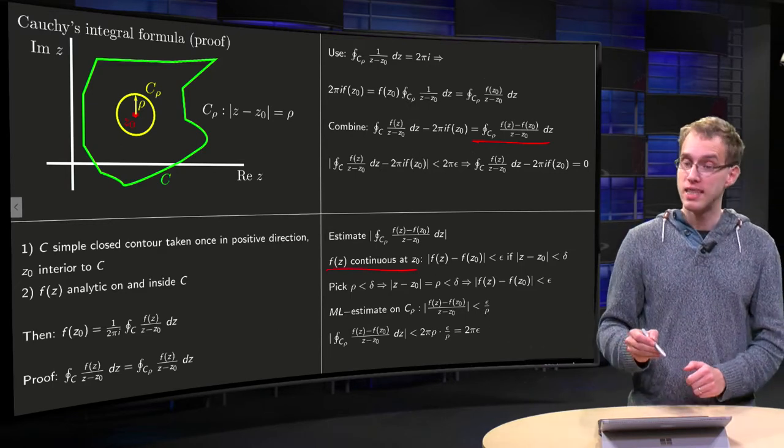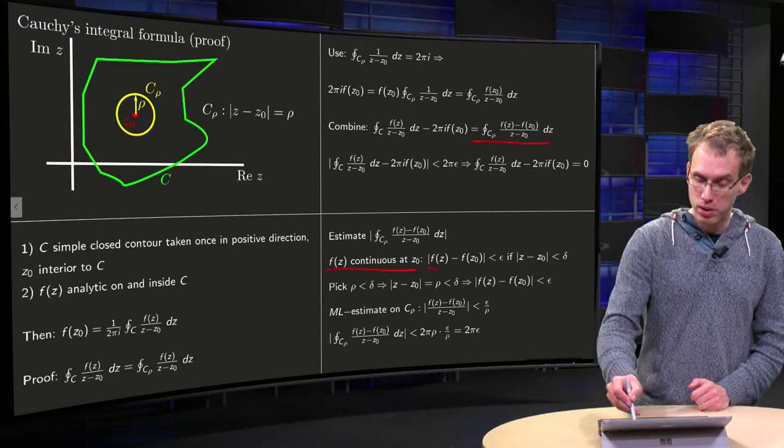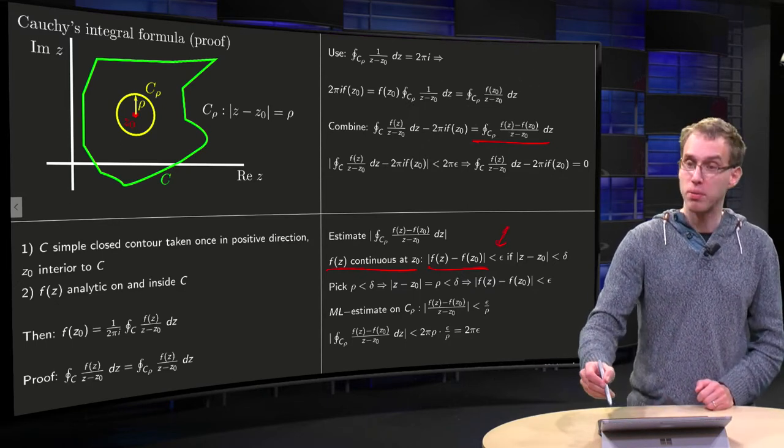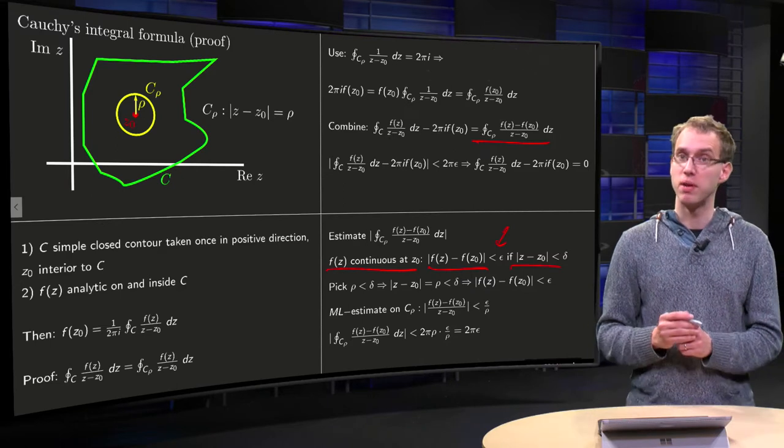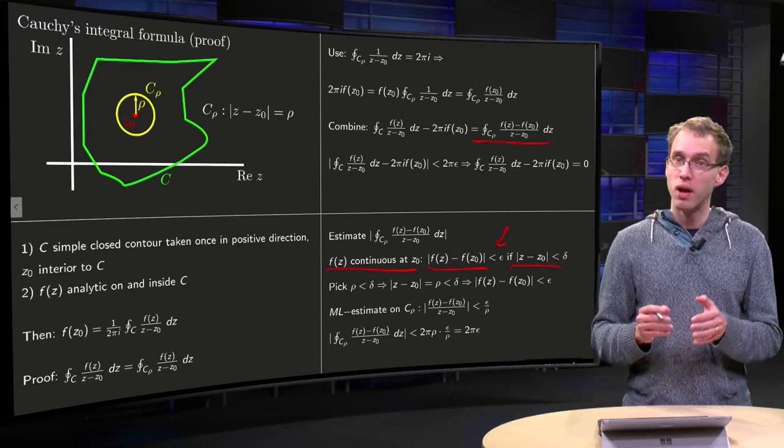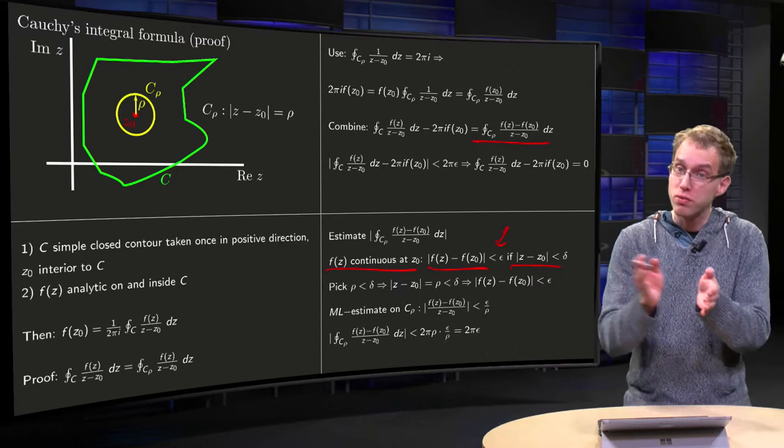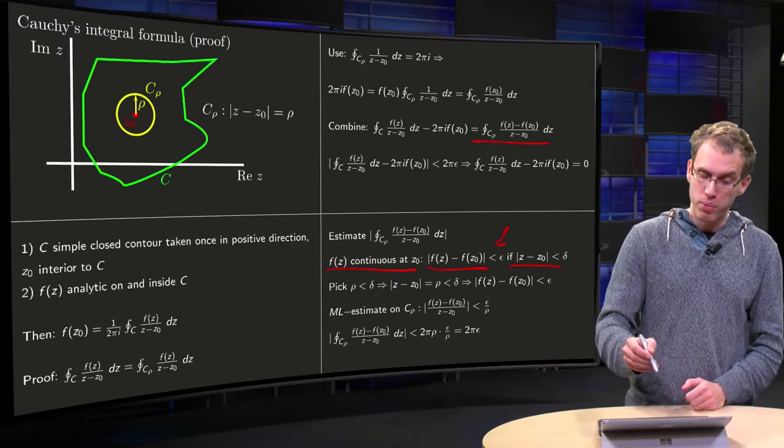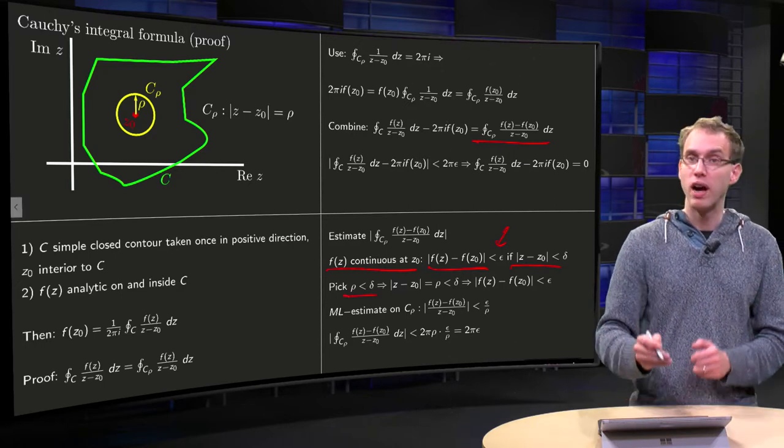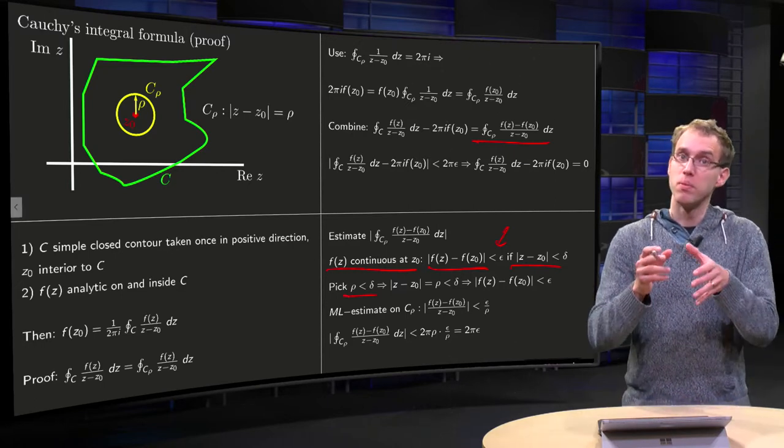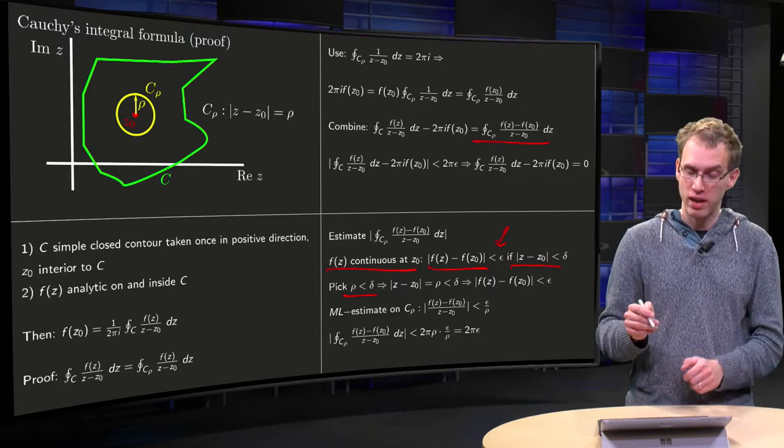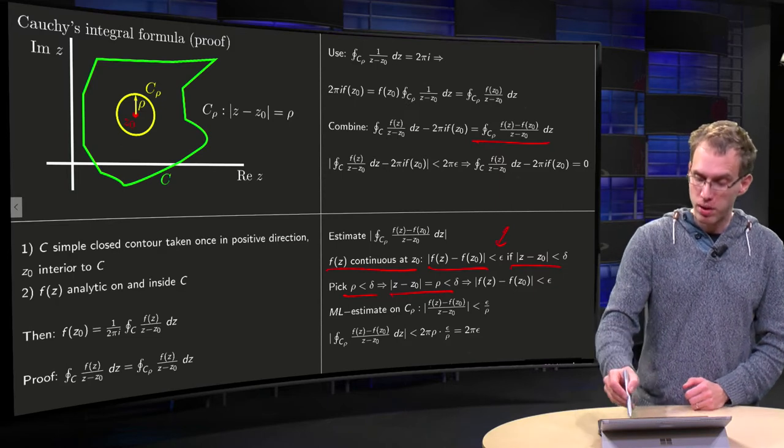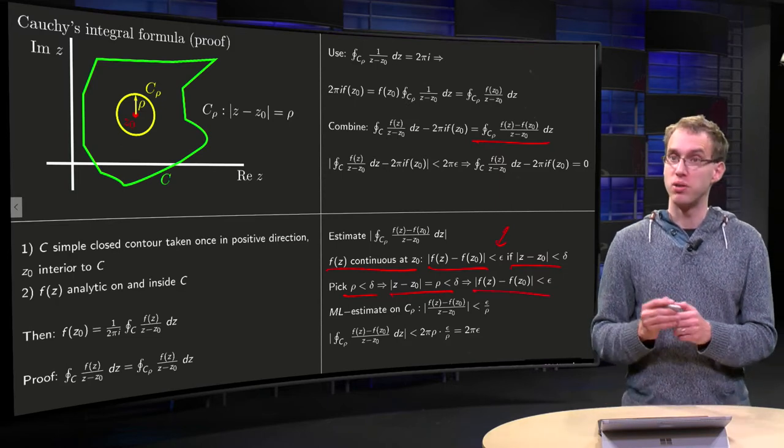Well, we know that f(z) is continuous at z0, so the modulus of the difference we can get below any epsilon, provided we can take z minus z0 close enough to zero. But we have that because we can take our rho as small as we like. So we pick our rho smaller than this required delta, and then we know that our f(z) minus f(z0) is smaller than epsilon.